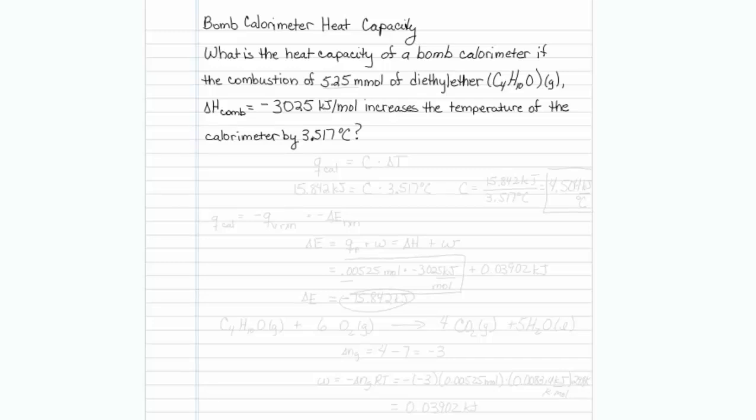This is how to determine a bomb calorimeter heat capacity. What is the heat capacity of a bomb calorimeter if the combustion of 5.25 millimoles of diethyl ether in the gas phase, and we're given the enthalpy of combustion,